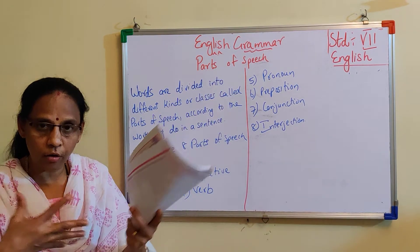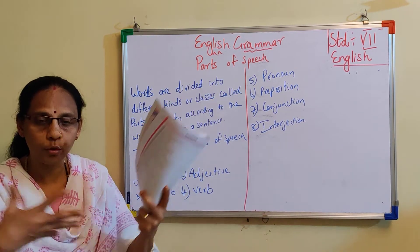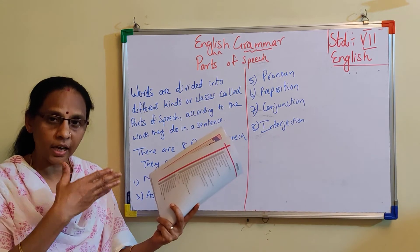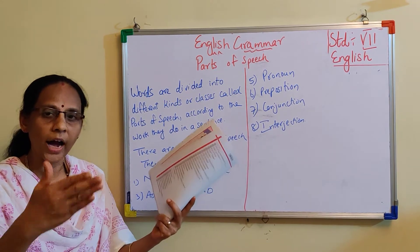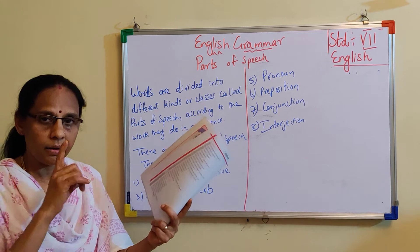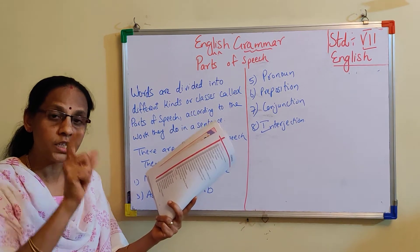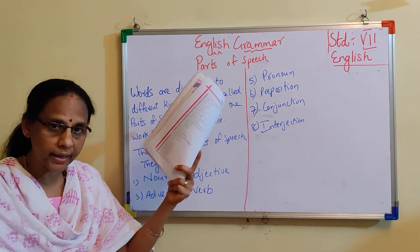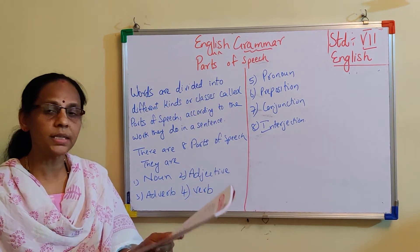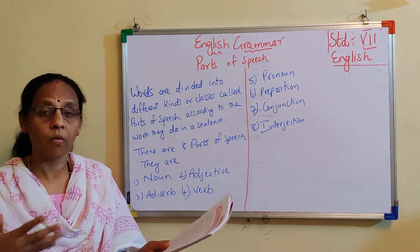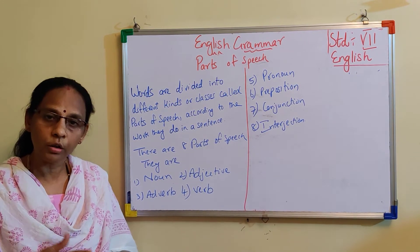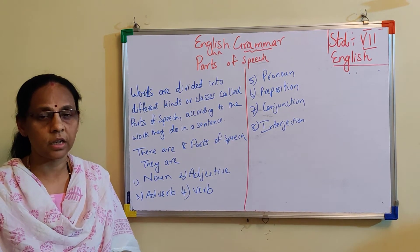Conjunction means the joining or linking of two words or sentences. For example: 'It is raining heavily, so I took the umbrella.' 'So' is the connection between the two sentences — that is conjunction. Interjection means expression of feeling: Wow, hooray, alas — all those are interjections.